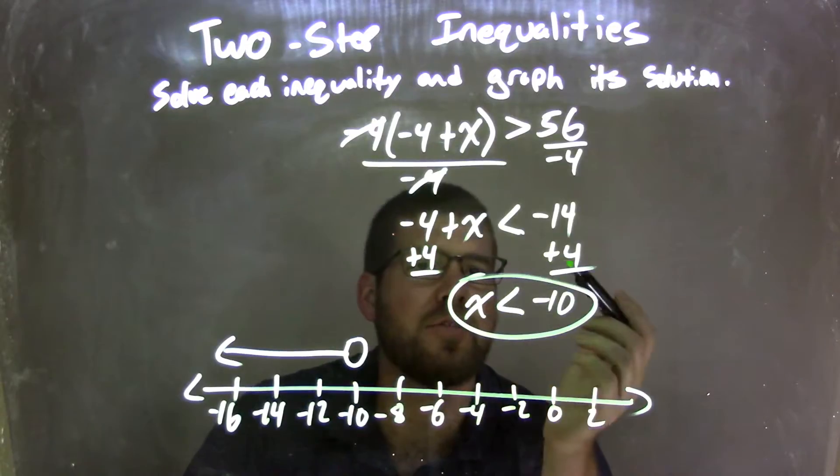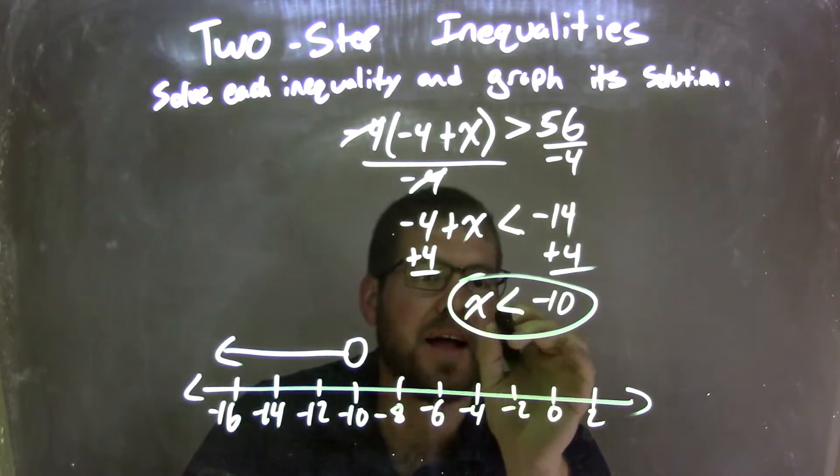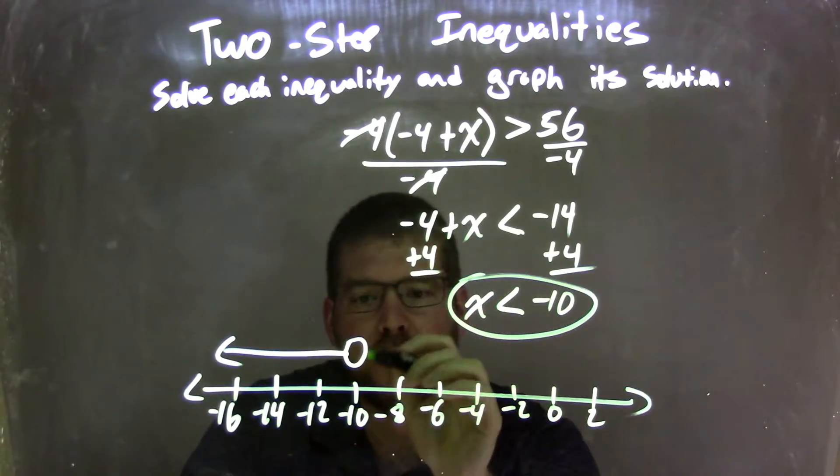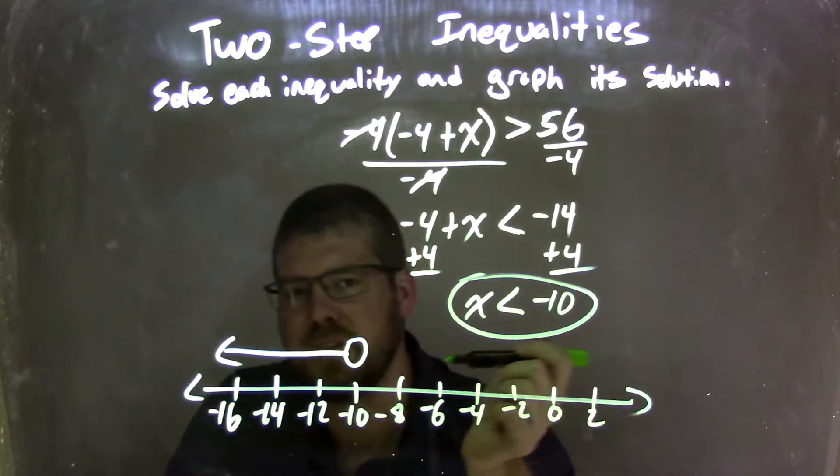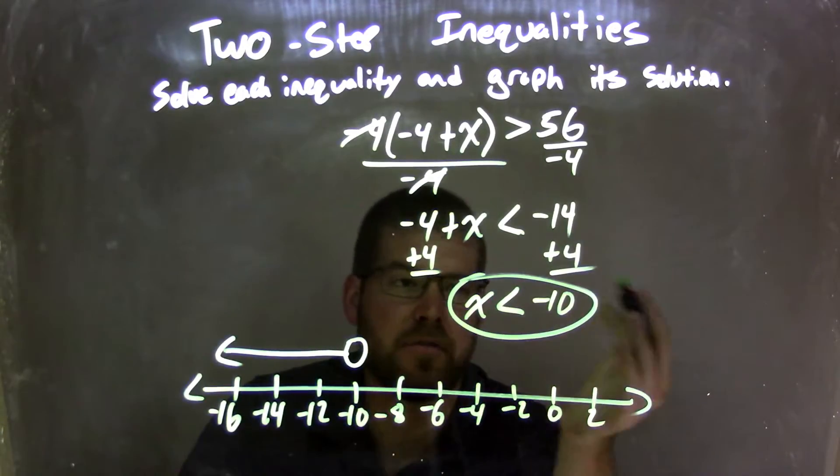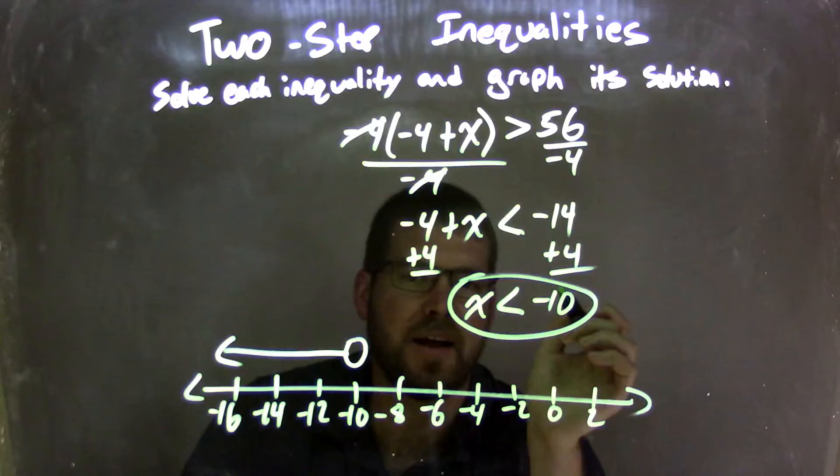I then add 4 to both sides, leaving me with x is less than negative 10. I had a graph that since it's not equal to, it's just less than, I had an open circle at negative 10 and I shaded to the left because of the less than sign. And so now our graph matches our final answer of x is less than negative 10.